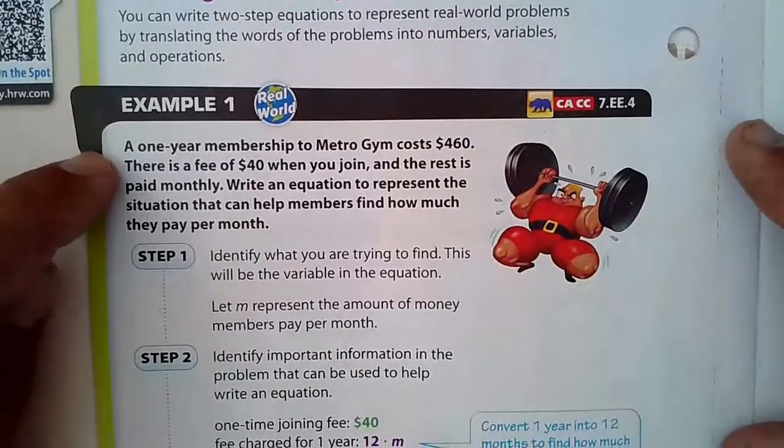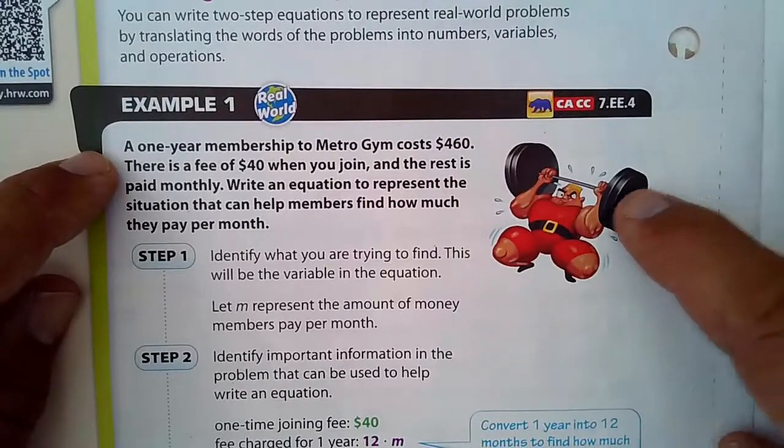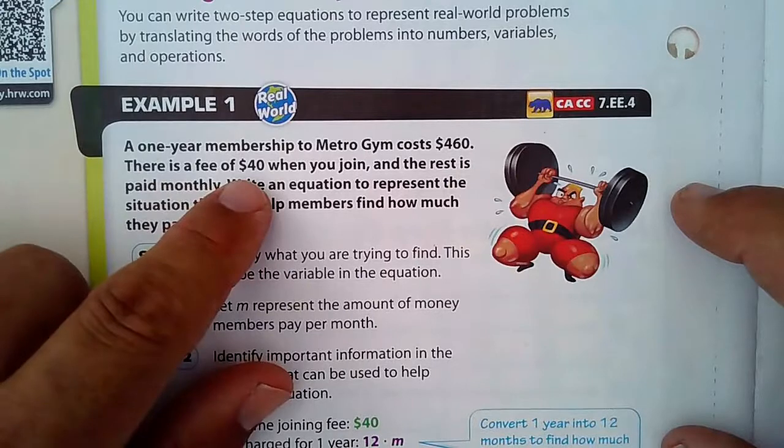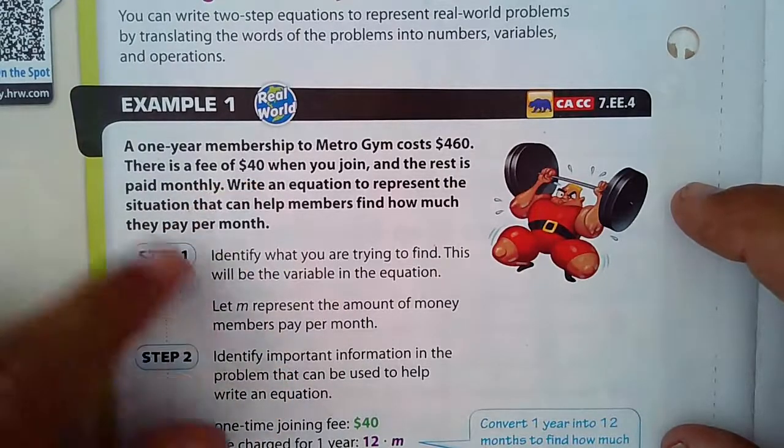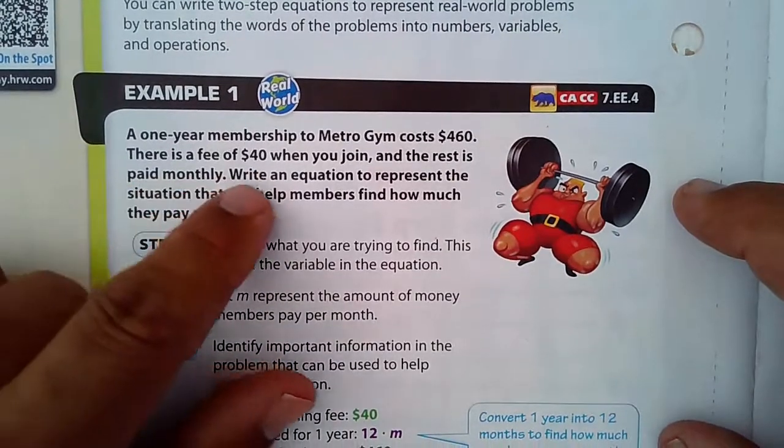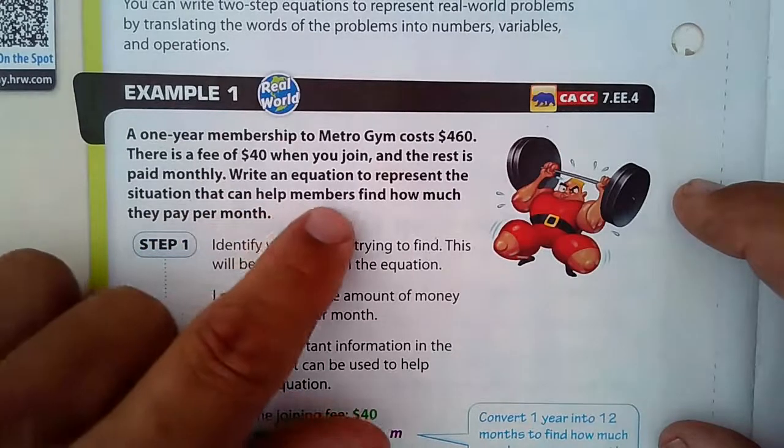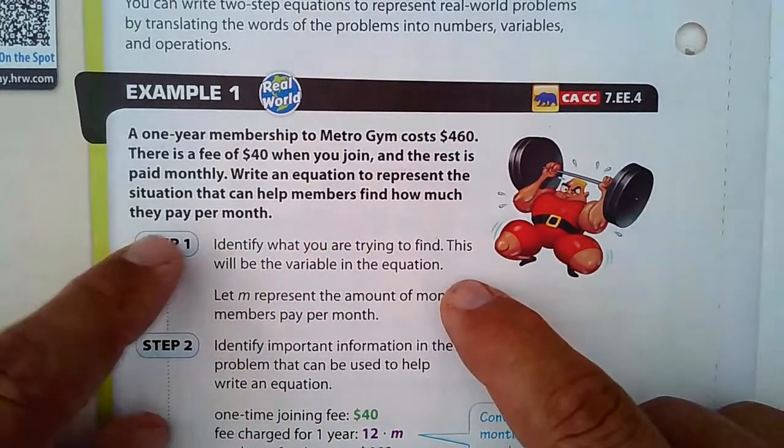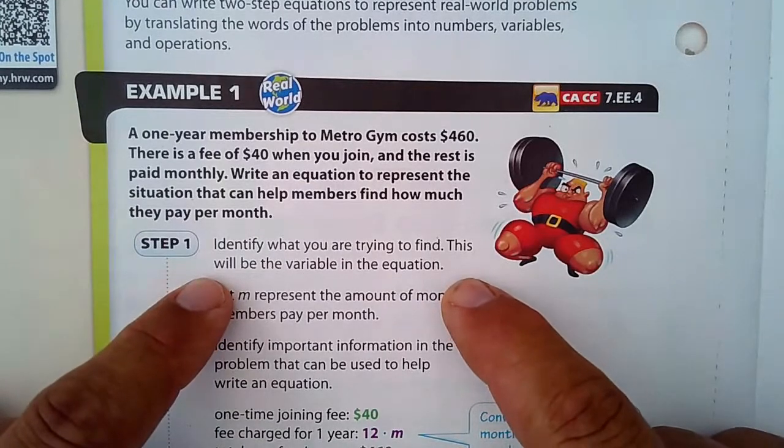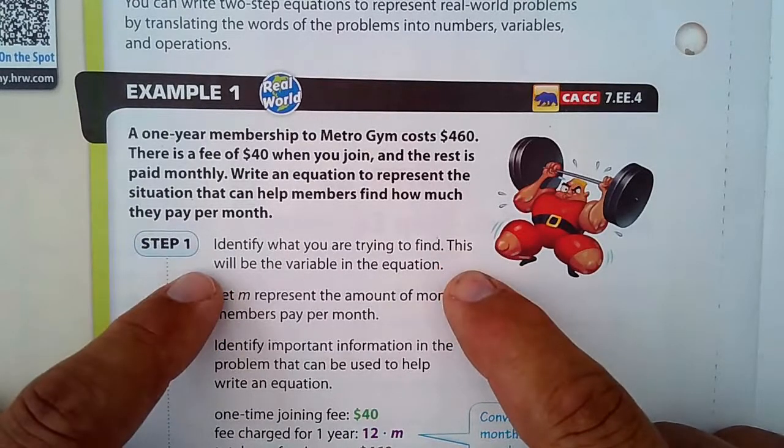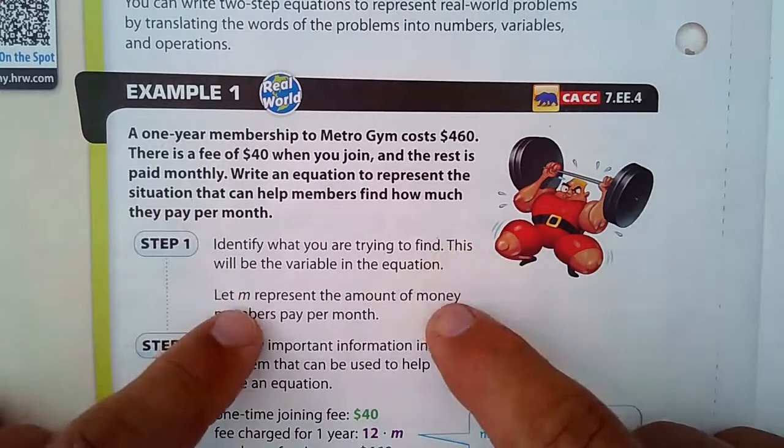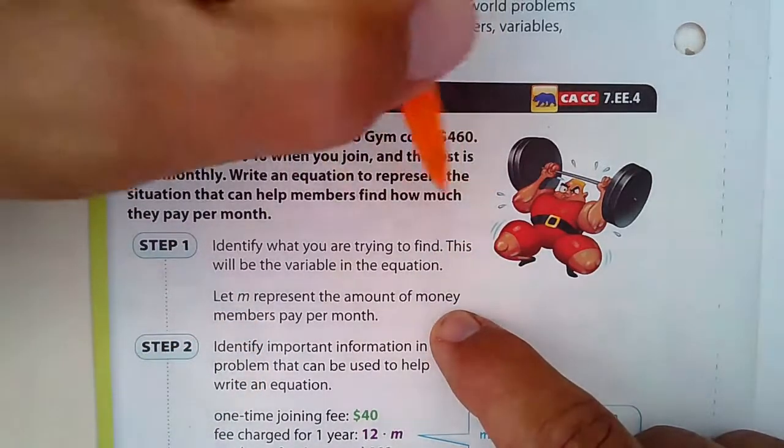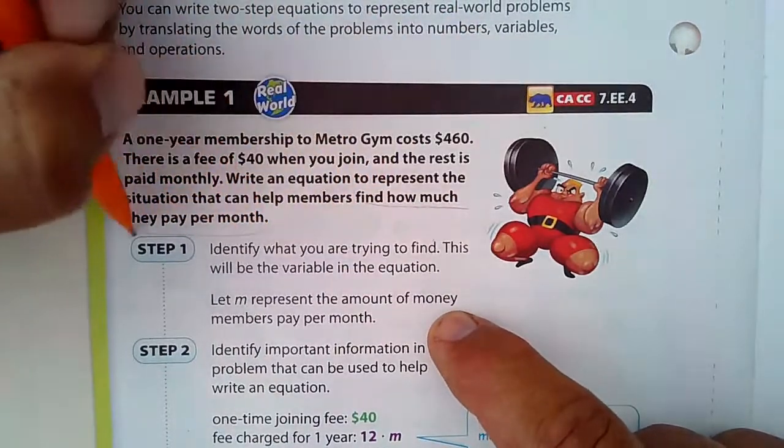In this example, a one-year membership to Metro Gym costs $460. There is a fee when you join of $40, and the rest is paid monthly. Write an equation to represent the situation that can help members find how much they pay per month. First, step one, we identify what we're trying to find. This will be our variable in the equation. M, we're trying to find the amount of money they pay per month.